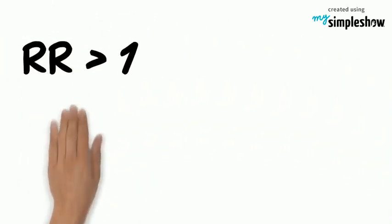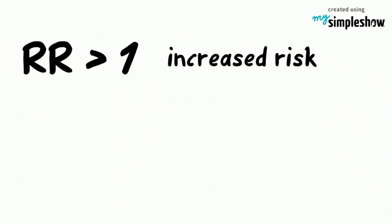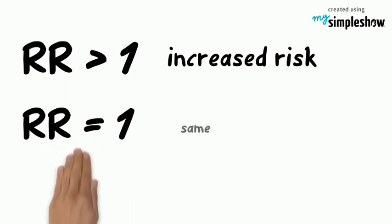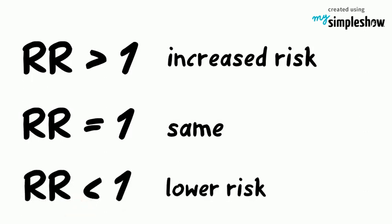A relative risk of greater than one means that the exposure is associated with an increased risk of the disease. If it is one, it indicates that the risk is the same. And if it's less than one, it indicates that the risk is lower.